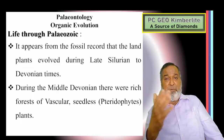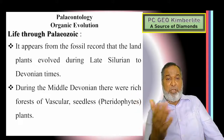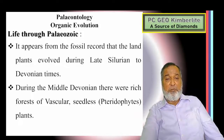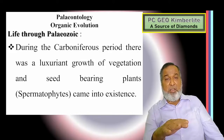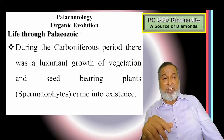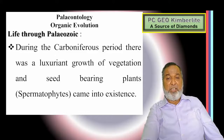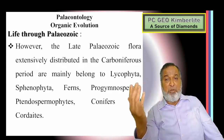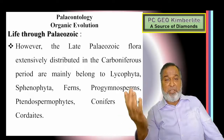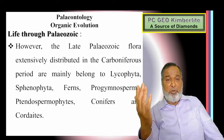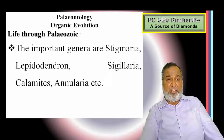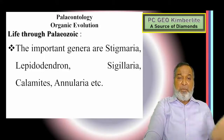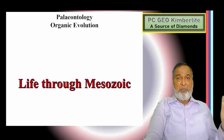The fossil record shows that land plants evolved during the Silurian to Devonian time. During the Middle Devonian, there were rich forests of vascular and seedless pteridophyte plants. During the Carboniferous period, there was luxuriant growth of vegetation and seed-bearing plants — the Spermatophytes came into existence. The late Paleozoic flora extensively distributed in the Carboniferous period mainly belongs to Lycophyta, Sphenophyta, Ferns, Progymnosperms, Cordaites, Spermatophytes, Conifers, and Cycads. Important genera are Sigillaria, Lepidodendron, Cordaites, Calamites, and Annularia. With this we have completed the Paleozoic.